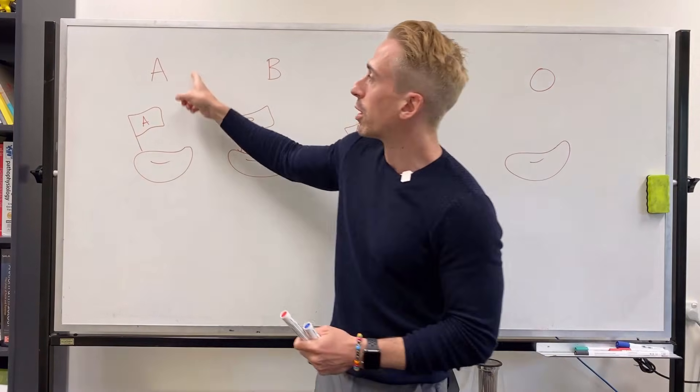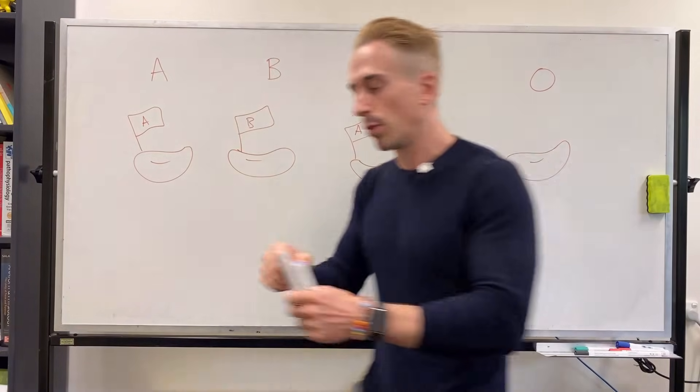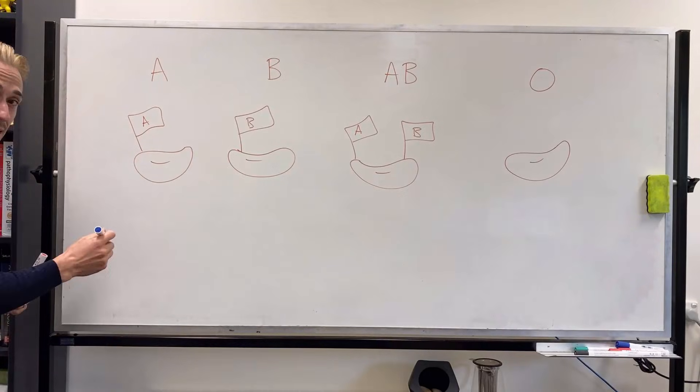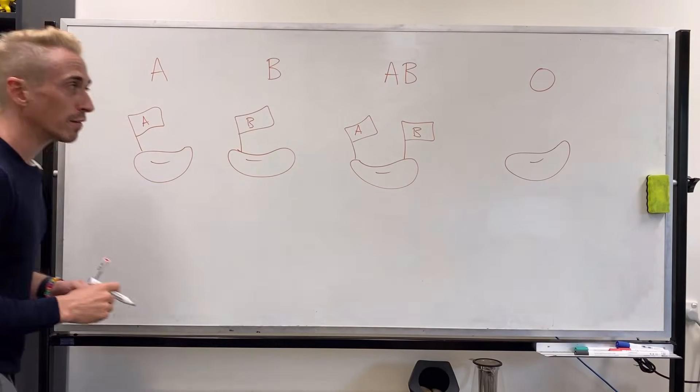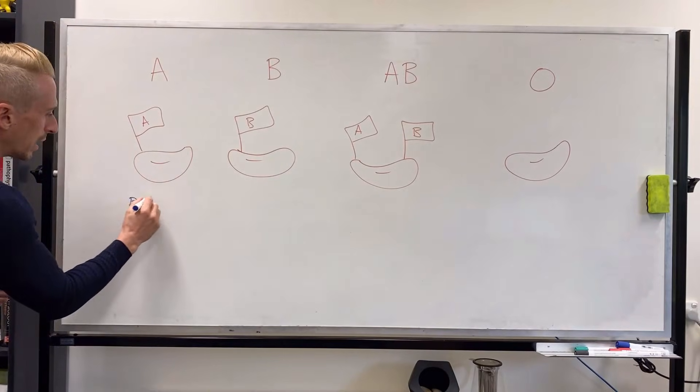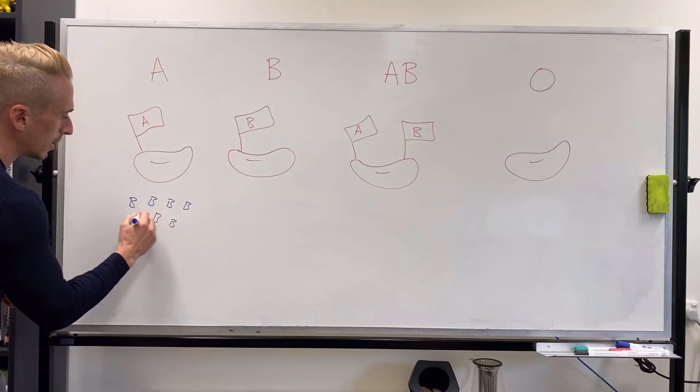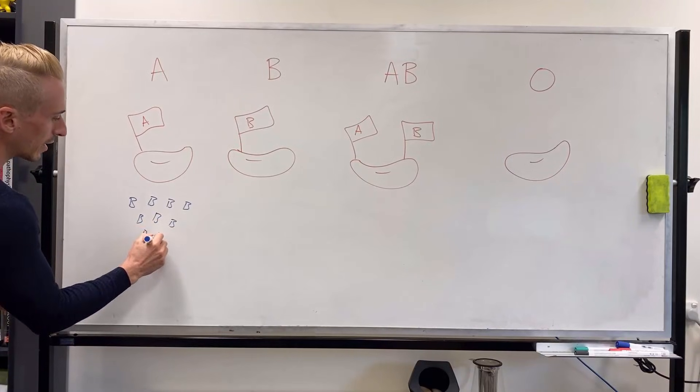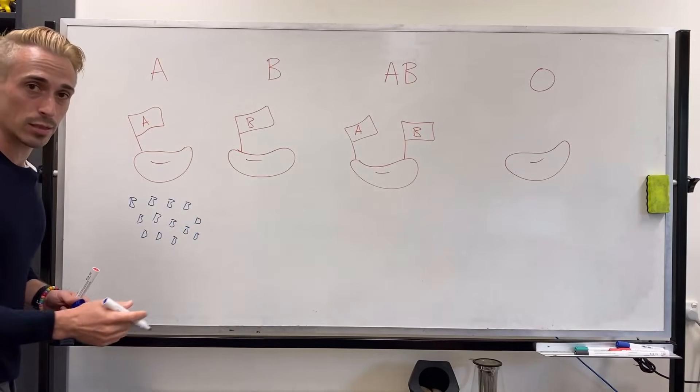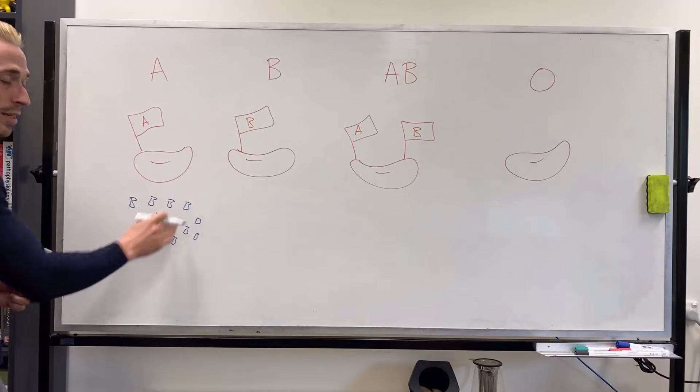So when we look at somebody with blood type A, their army, which we call the antibodies, their antibodies are going to be against all the flags that they don't have. And the only flag they don't have is B, so they're going to have B antibodies. These are the army that's going to attack any invading pathogen or antigen of another blood type. So if you're blood group A, you're going to have antibodies against B.